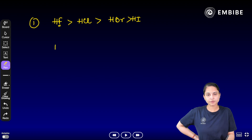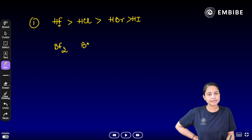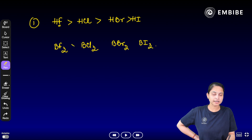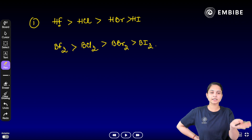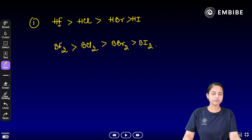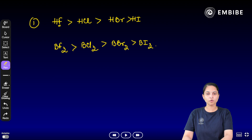Similarly, for BF₃, BCl₃, BBr₃, and BI₃, the order of thermal stability is BF₃ > BCl₃ > BBr₃ > BI₃. The reason is the same — smaller anion size means stronger overlap and higher thermal stability.